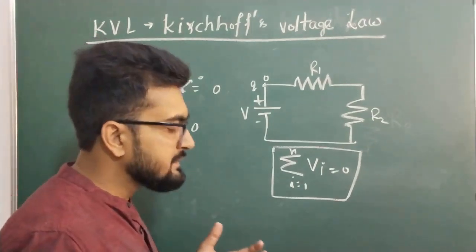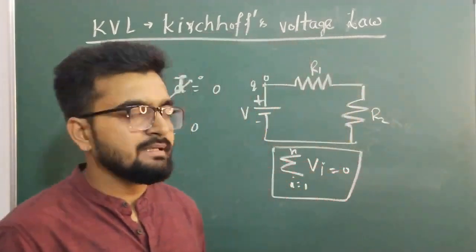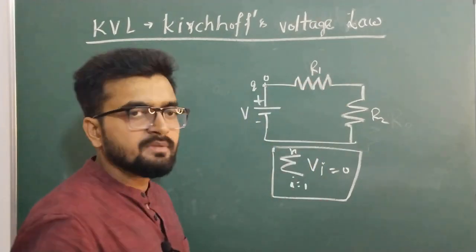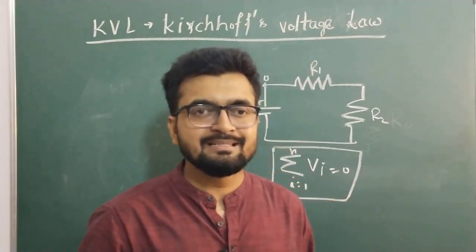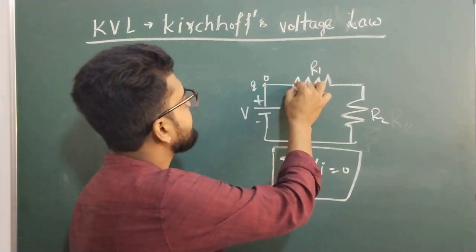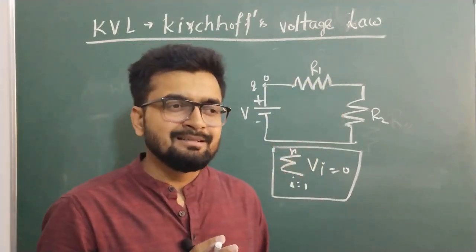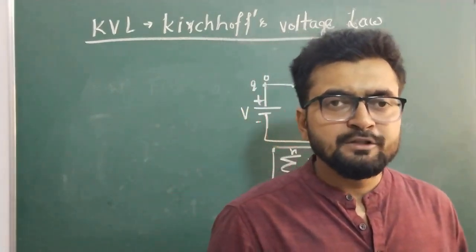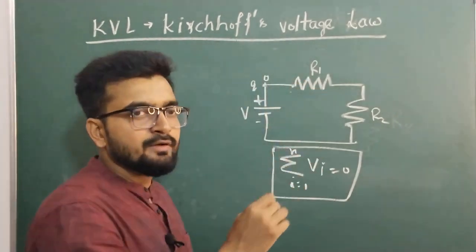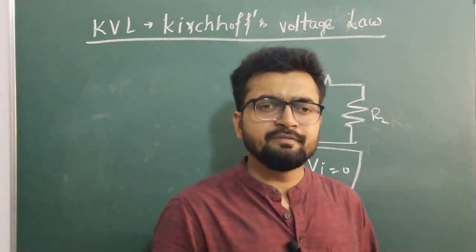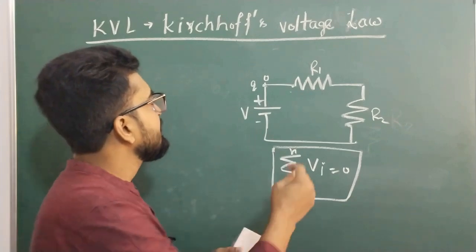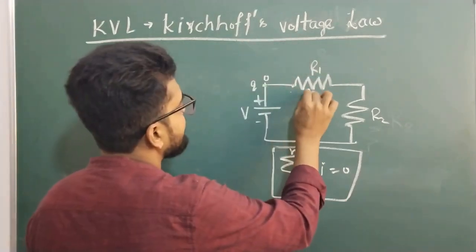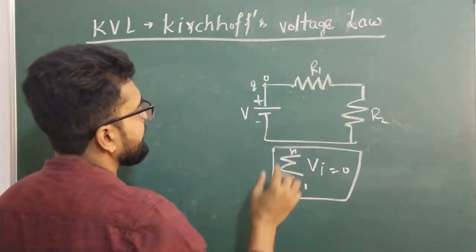Now let's connect KVL with the law of conservation of energy. As the charge moves from the battery and passes through a resistor, it carries some potential energy. The property of a resistor is to resist the flow of charge. As it resists, some amount of potential energy carried by the charge is lost — dissipated by the electrons or ions in the resistor in the form of heat. So there is a drop in energy at R1.